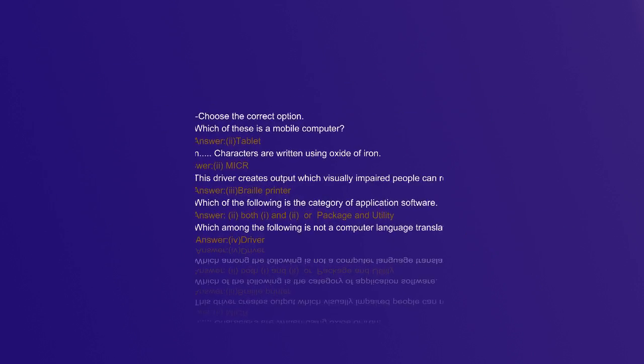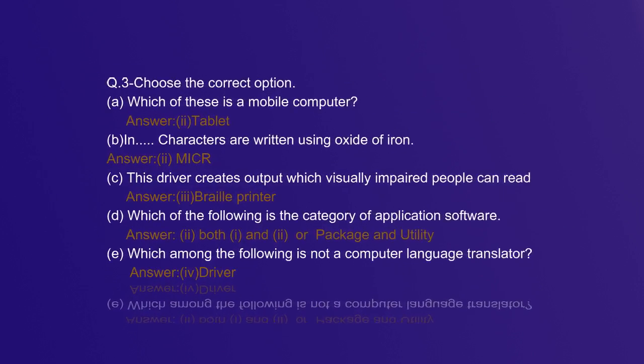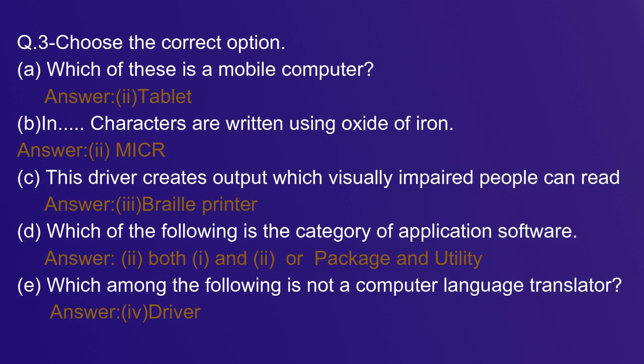Third one: choose the correct options. A: Which of these is a mobile computer? Tablet. B: In MICR, characters are written using oxide of iron.